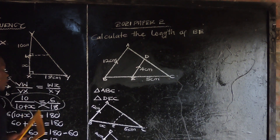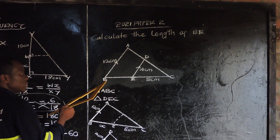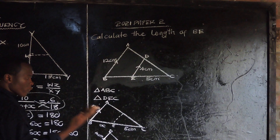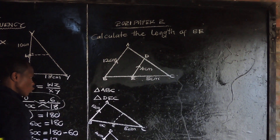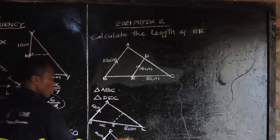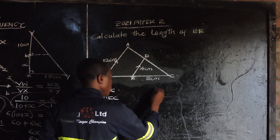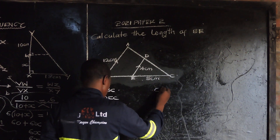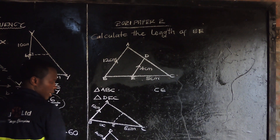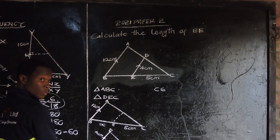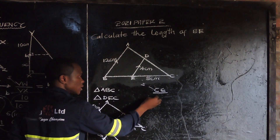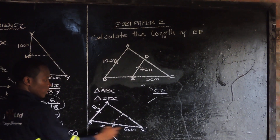We are told to find BE. So I'm going to use pairs of corresponding sides. It has to be CE over CB — this one is from the small triangle, and the corresponding side from the big one is CB.